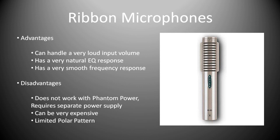The advantages of ribbon microphones are they can handle extremely loud input volumes, so they're great for guitar cabinets — you'll often see them used there. They have a very natural EQ response and a very smooth frequency response. Some of the disadvantages are they do not work with phantom power and require a separate power supply. Some older ribbon microphones can actually be damaged by phantom power, though newer ones are being built with features that stop phantom power causing any damage. Ribbons can also be extremely expensive — up to a few thousand pounds — and they have a limited polar pattern pickup.